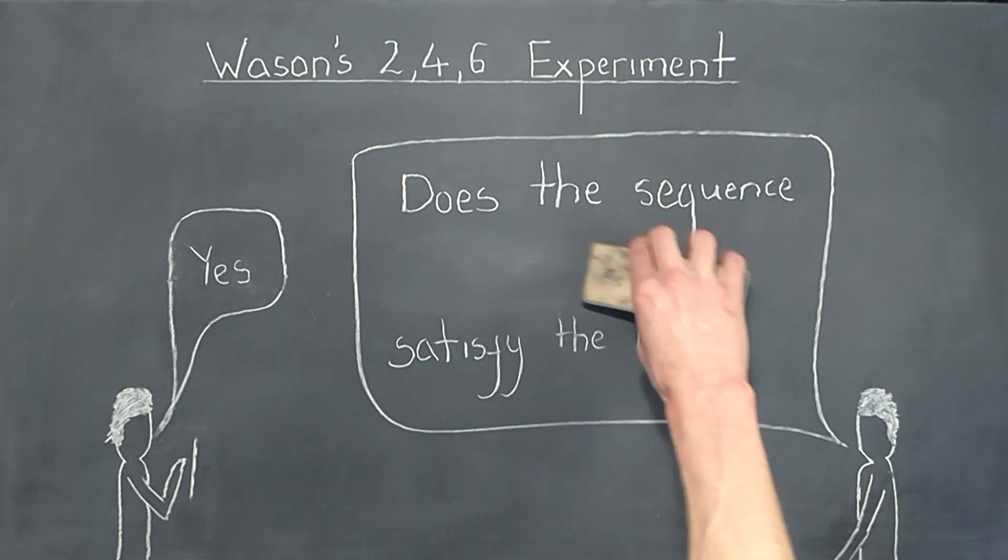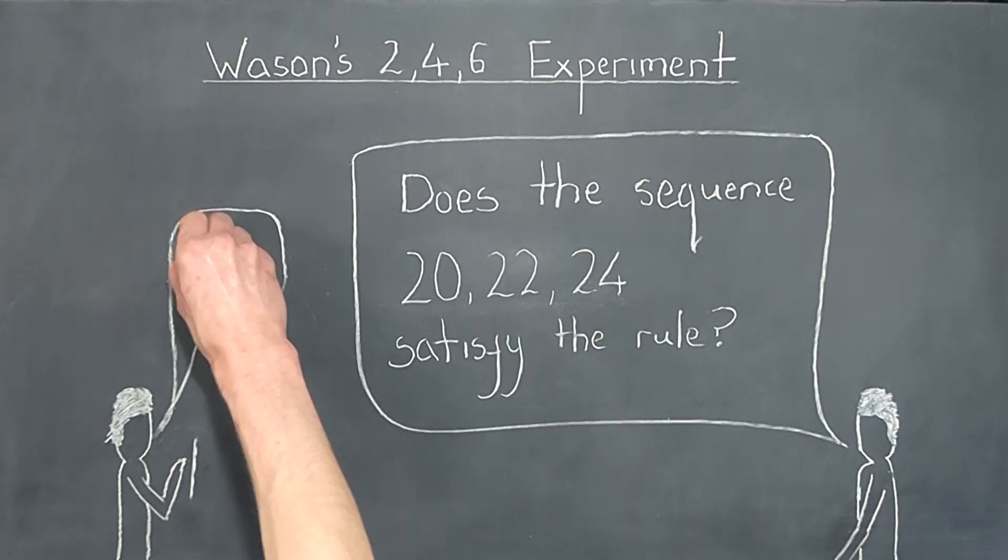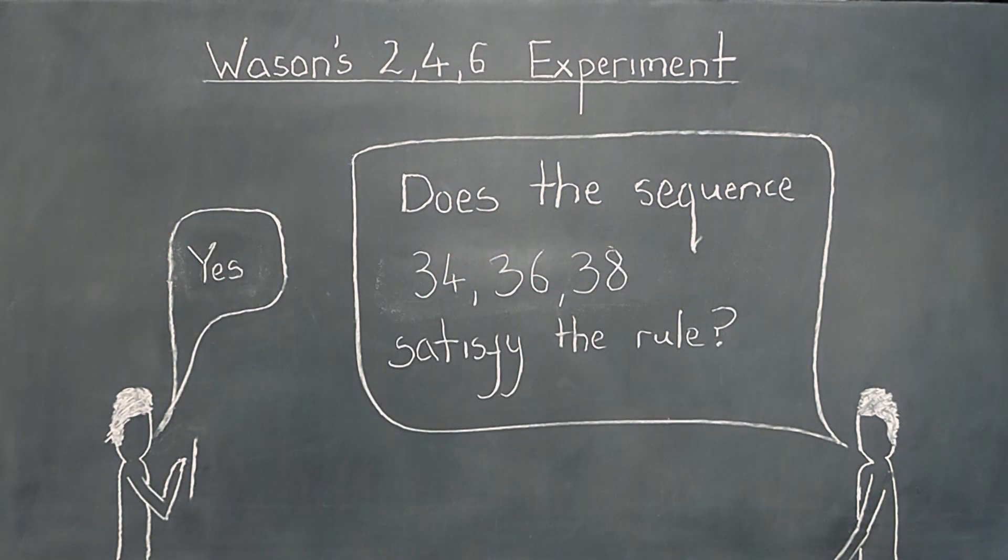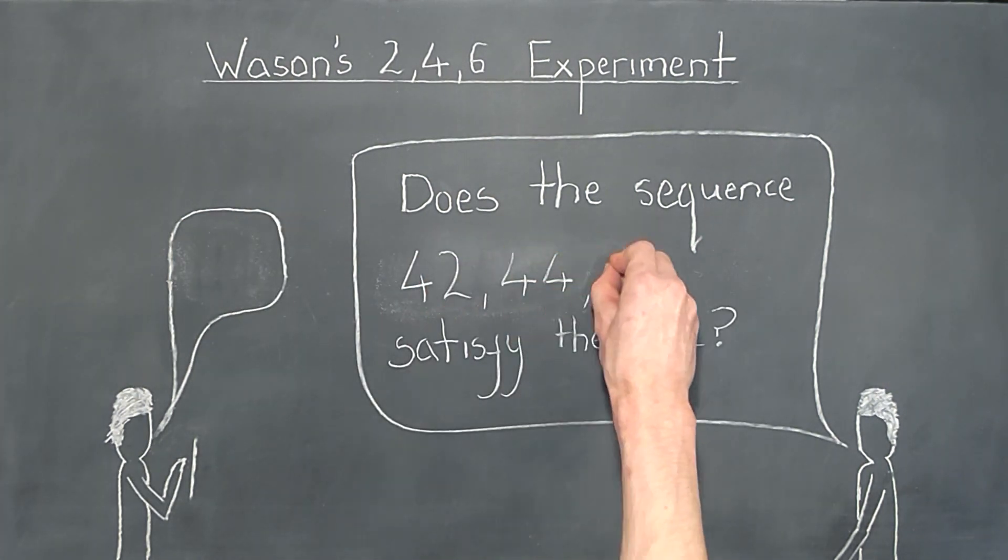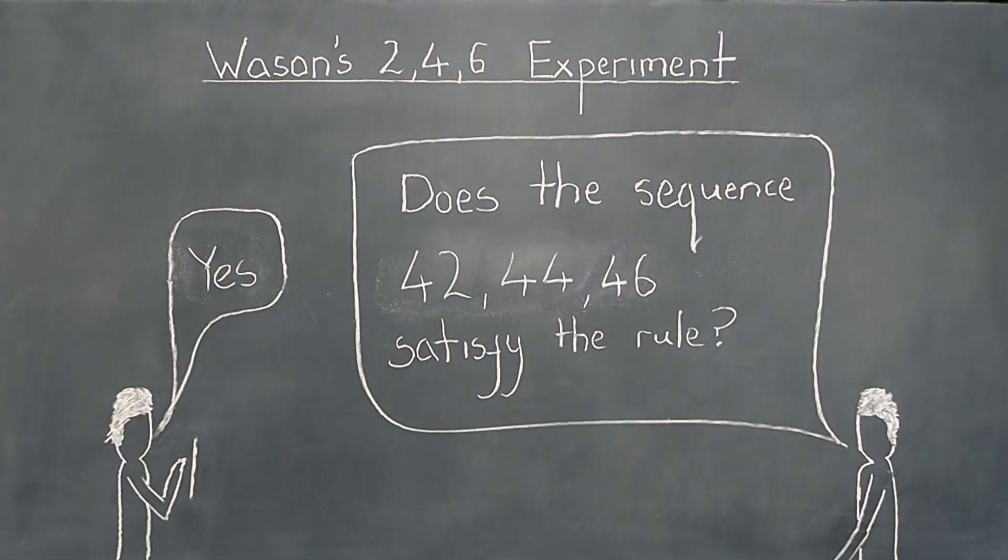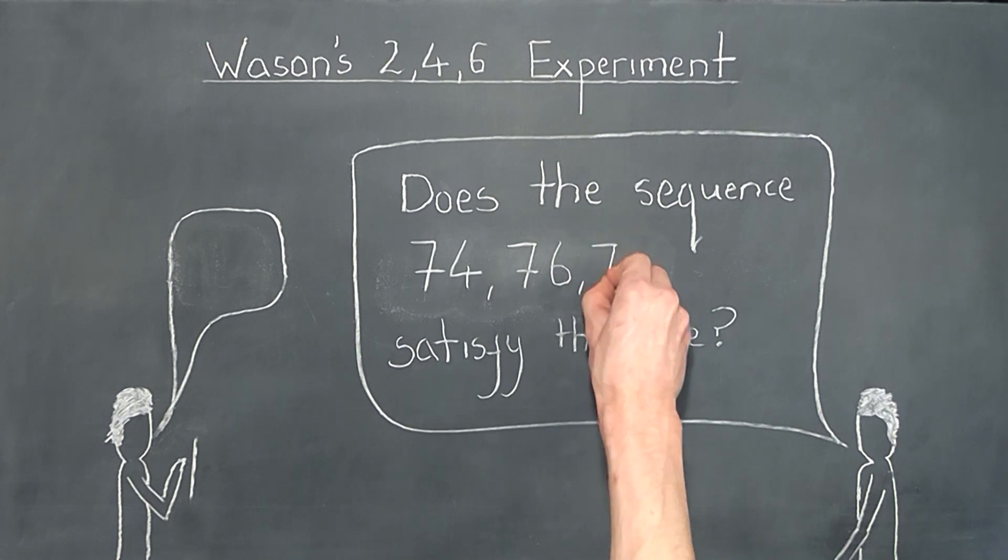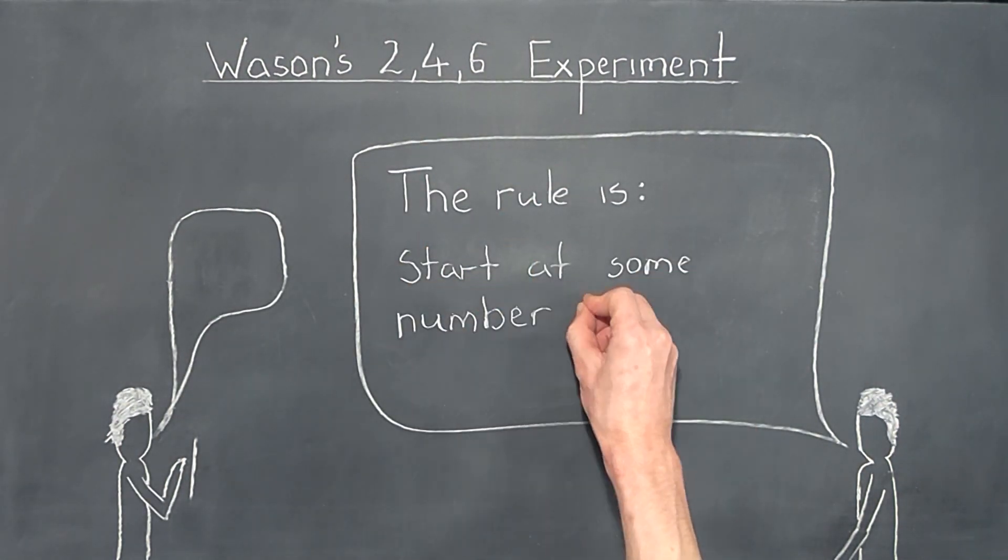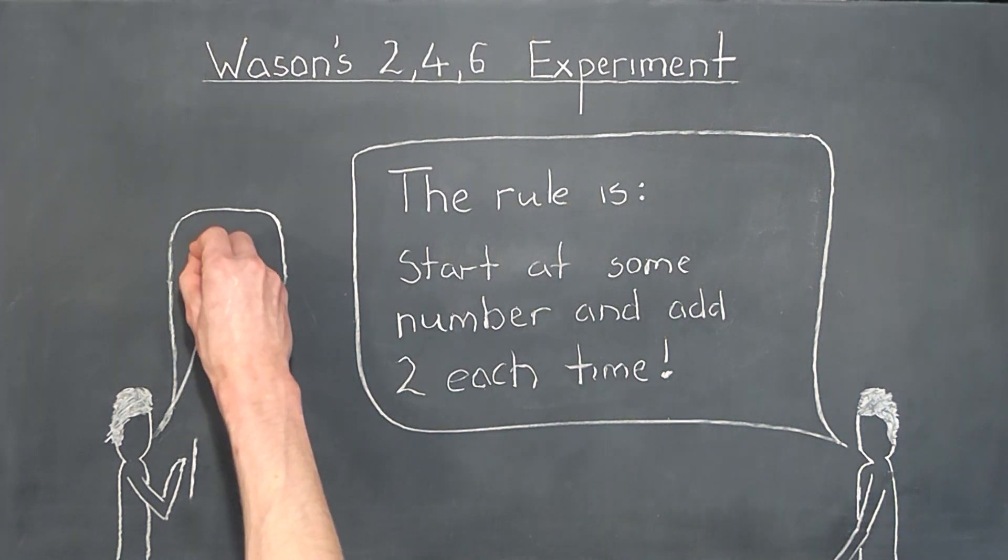The majority of participants noticed the pattern of starting at some number and adding two each time, and suspected this to be the rule. They then proposed sequences which followed this rule. After all their guesses were confirmed to fit the rule, they were satisfied that they had seen enough information to confirm their initial guess and confidently asserted it to be the rule. Which is wrong.